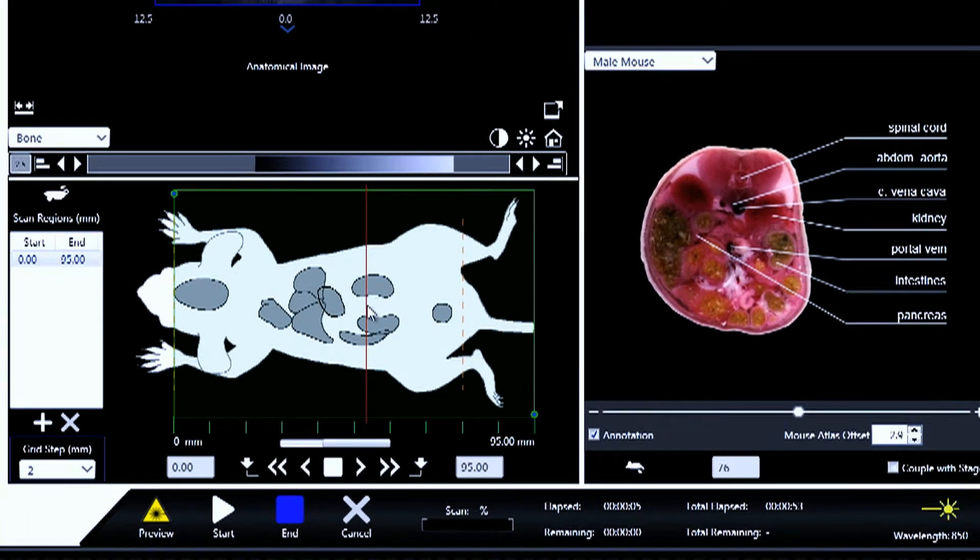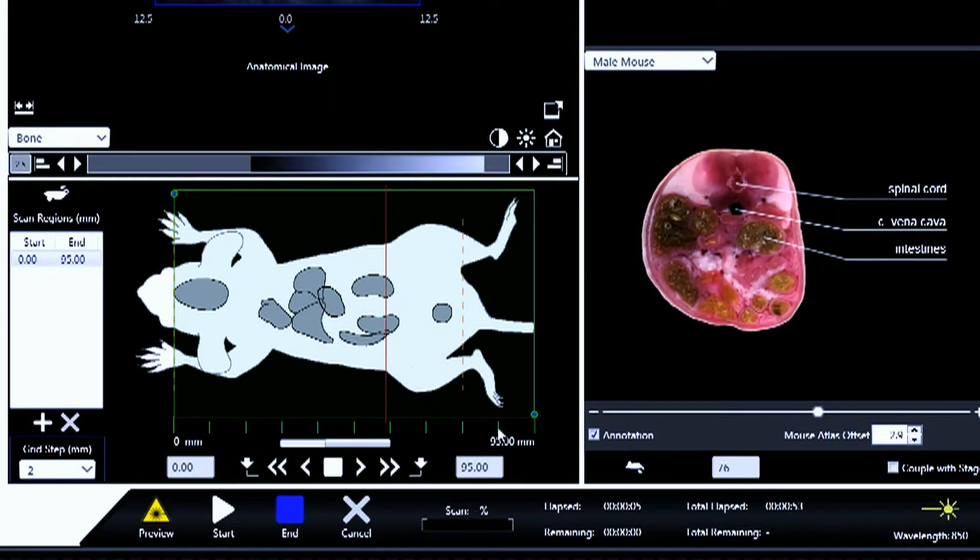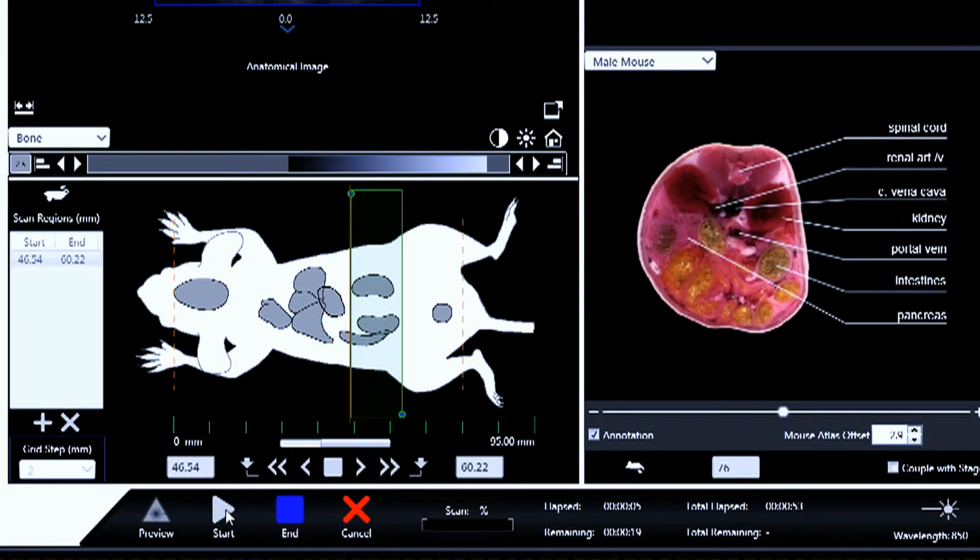Before starting image acquisition, the user defines the scan region by clicking on the desired anatomy or through use of the stage controls. Users can set individual or multiple scan regions. The user then starts the image acquisition.